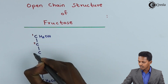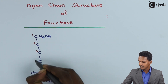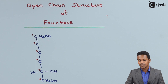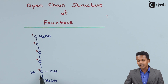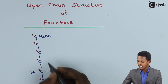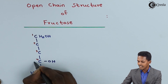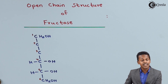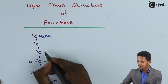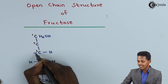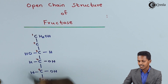Looking at carbon number 1, 2, 3, 4, 5, and the sixth one — the fifth carbon atom consists of the OH group on the right-hand side, while on the fourth carbon atom the OH group should also be on the right-hand side and H on the left-hand side. On the third carbon atom, there should be H on the right-hand side and OH on the left-hand side.